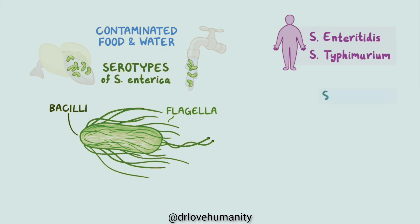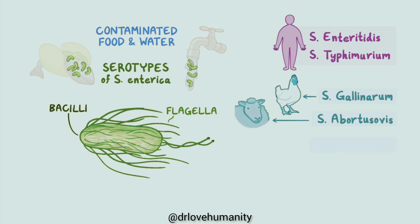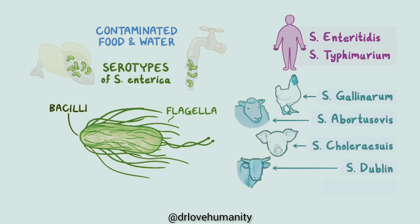These include S. gallinarum in poultry, S. abortusovus in sheep, S. cholerasuus in pigs, S. dublin in cattle, and S. arizoni in reptiles, among others. All of these strains can also infect humans.